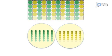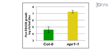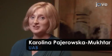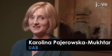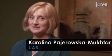Ultimately, bacterial growth within each leaf disc can be correlated to the relative strength of the plant immune response. This method can help answer key questions in the field of plant immunity, such as identifying genes that contribute to defense responses against biotic stress.